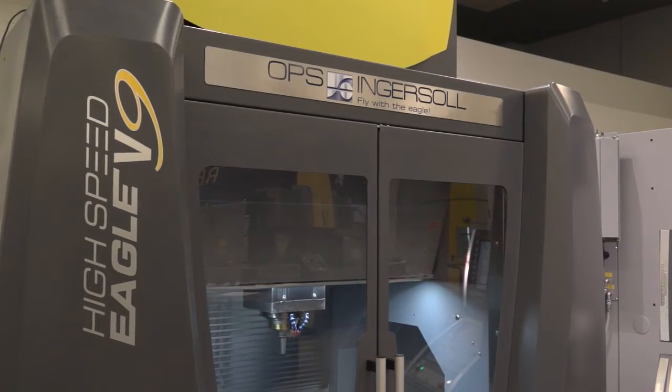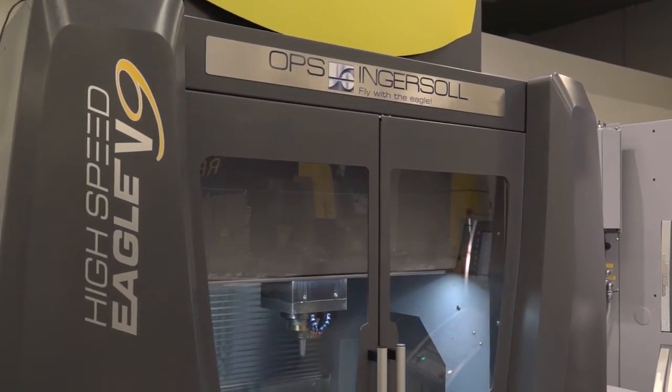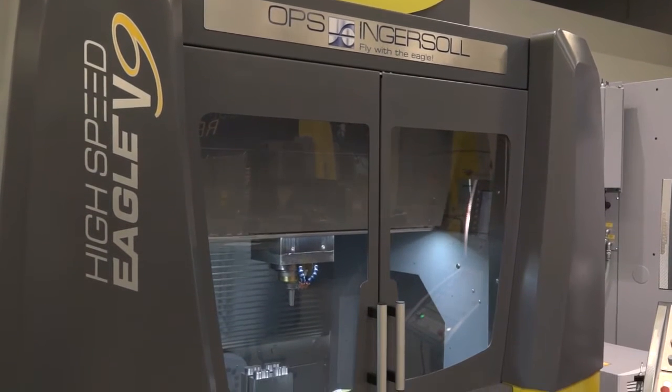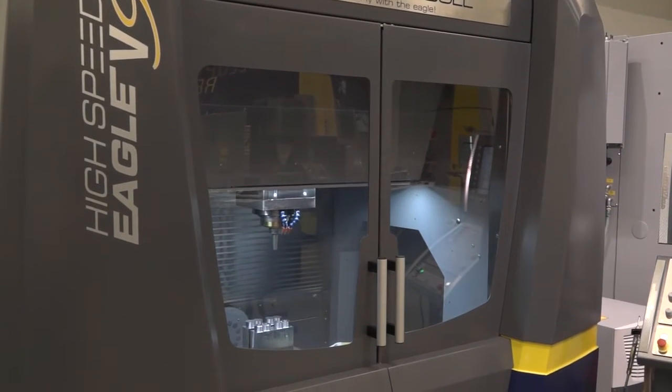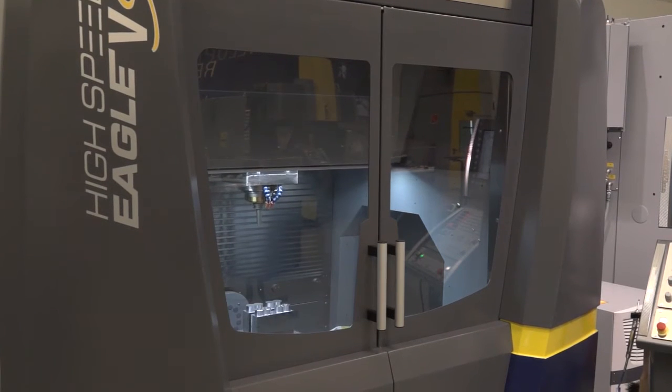What's the benefit of that? That gives us real dampening features when we're looking at doing larger roughing machining. As you can see this is a much larger machine compared to its smaller brother, the V5. With OPS Ingersoll, they're renowned for quality and accuracy.